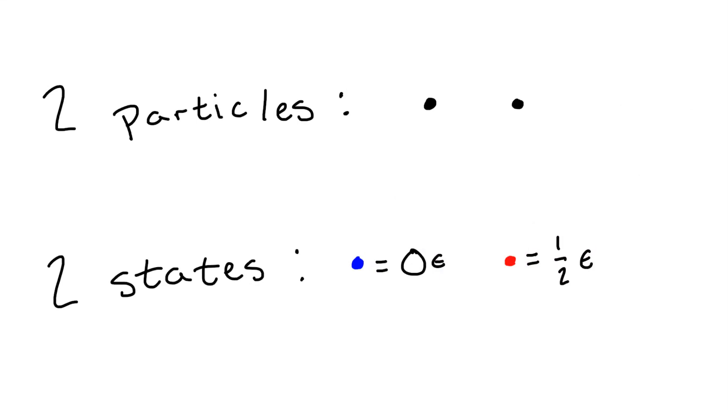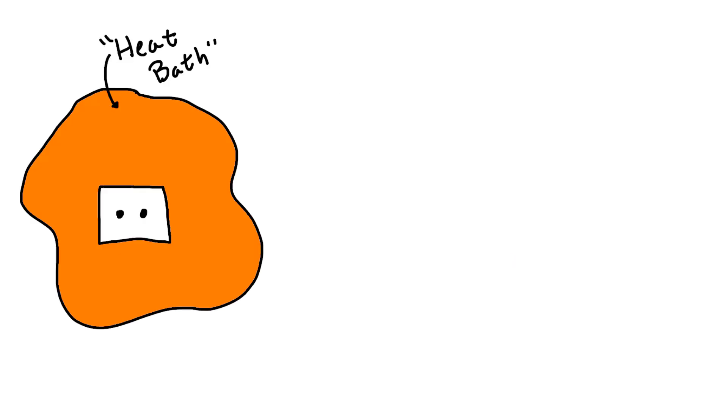Now, couple these particles to an energy source/sink called a heat bath so that they can draw in energy and give up energy randomly. So in all, there are four possible states. One with total energy zero, one with total energy epsilon, and two with total energy one half epsilon.